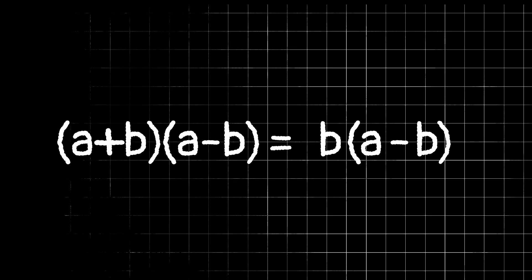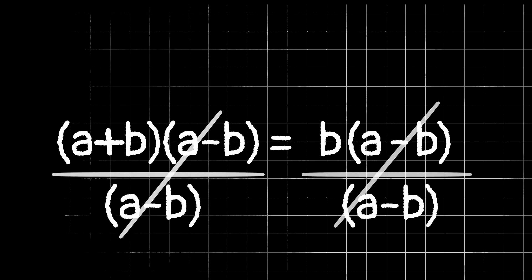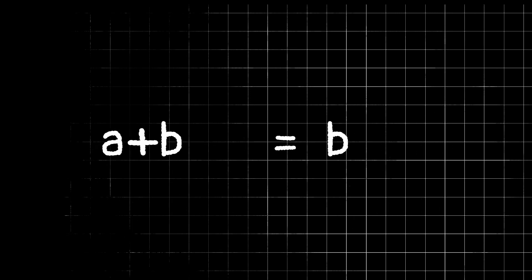Notice that there is an a minus b on both sides of our equation, so let's just go ahead and divide both sides by a minus b to cancel those out, leaving us with a plus b equals b.